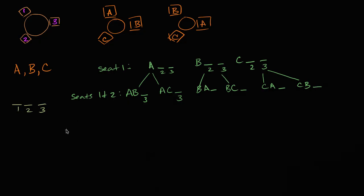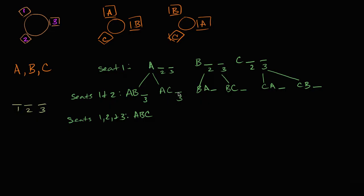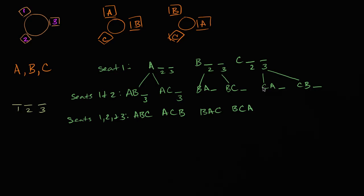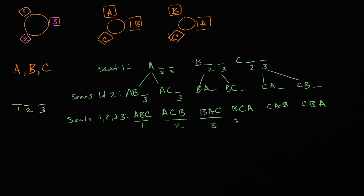Now let's fill out all three seats. When A is in seat one and B is in seat two, the only person left is C — so that's A, B, C. When A is in seat one and C is in seat two, the only option is B — giving A, C, B. Continuing: B, A, C; B, C, A; C, A, B; and C, B, A. Counting all scenarios: one, two, three, four, five, six. Six is our answer — the number of ways the people can sit in the chairs.